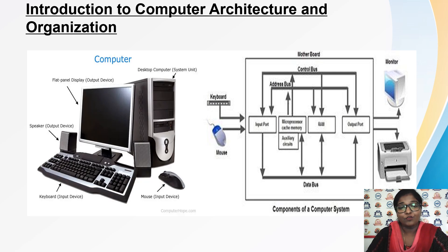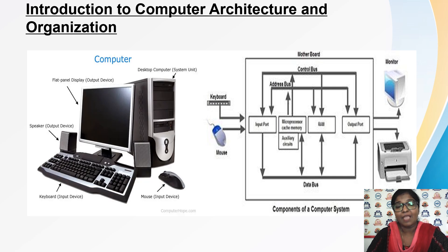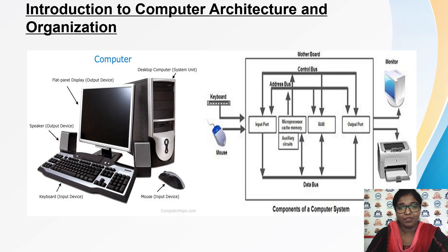How does our computer look in the real world? We see the computer with one output device, various keyboard devices, and one cabinet. This cabinet is where the processing elements that actually work are housed. All of these are hardware which are of no use if we don't know how these processing elements work.